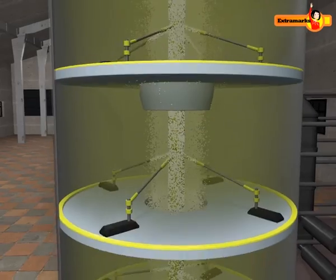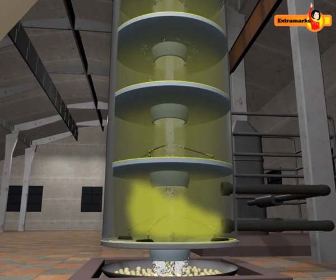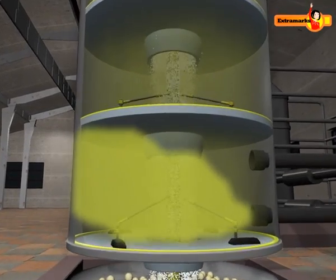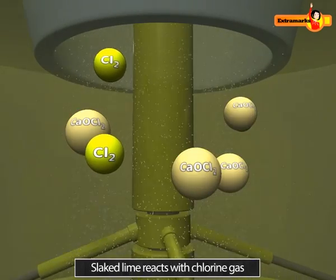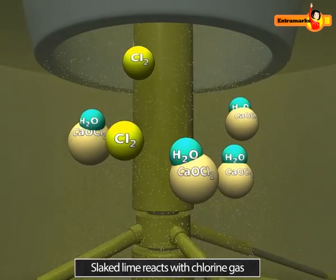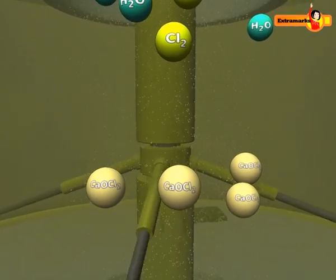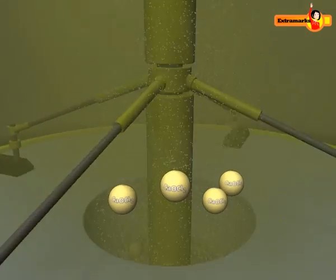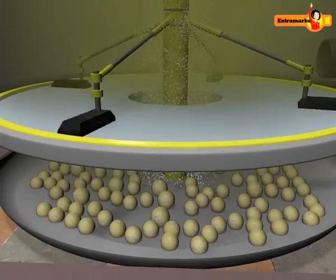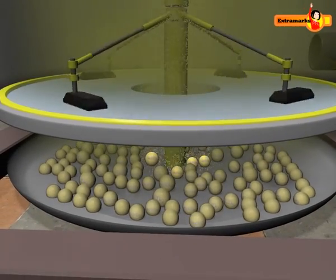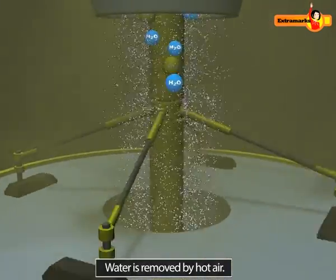During this downward movement, the dry slaked lime comes in contact with chlorine gas, which moves from bottom to top. The dry slaked lime reacts with chlorine gas to form bleaching powder and water. The bleaching powder is collected at the base of the tower.